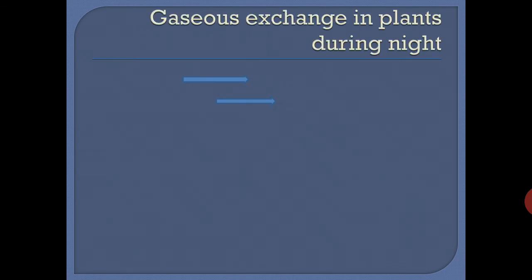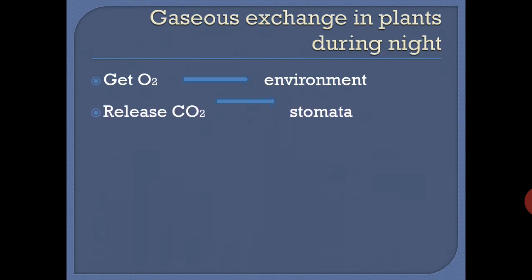At night, during nighttime there is no photosynthesis. The leaf cells get oxygen from the environment and release carbon dioxide through stomata. That's why we feel suffocation at night near plants because more carbon dioxide is present in the surrounding.